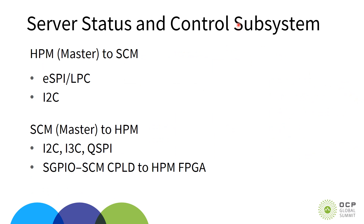Moving on to the server status and control subsystem: there are buses where the HPM is the master, including the eSPI and LPC bus used in some architectures, or I2C bus used in others. There are also buses where the SEM or BMC is the master, like I2C, I3C — typically used for DIMMs on HPM — as well as QSPI, typically between the BMC and the HPM FPGA. We also support the serial GPIO interface between the SEM-CPLD and the HPM FPGA.